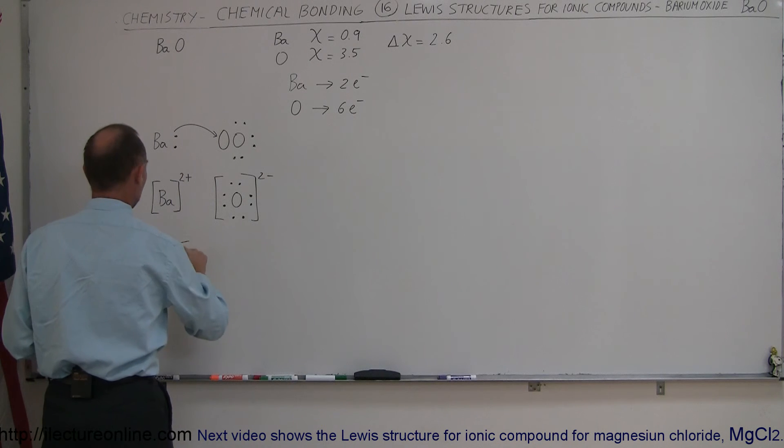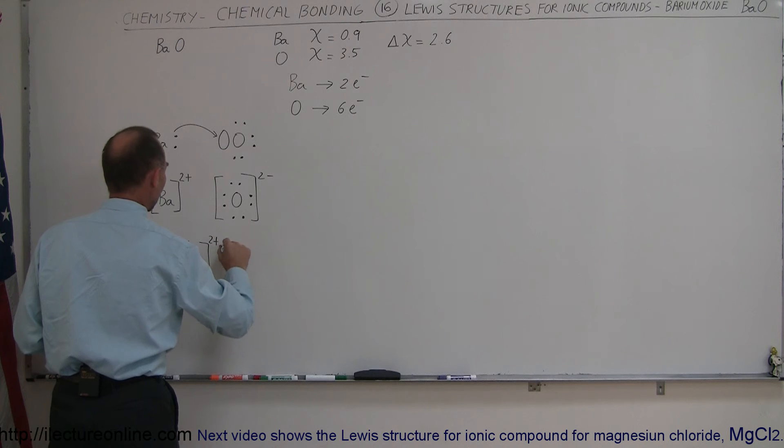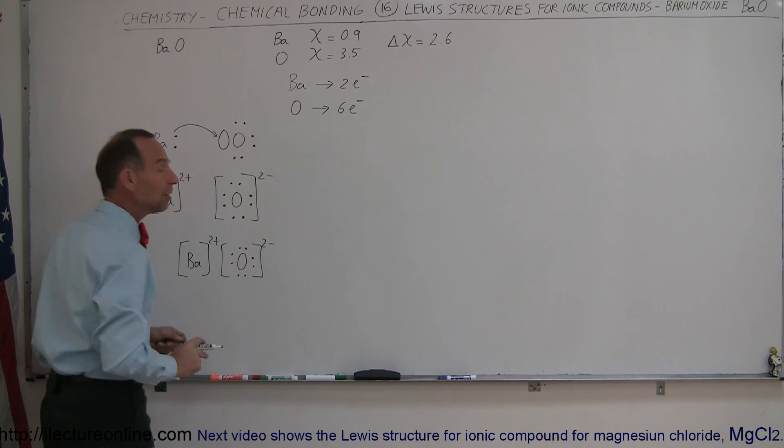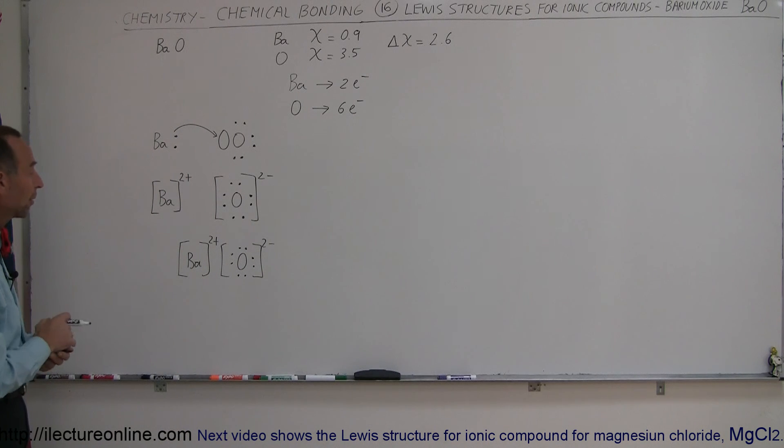Basically you end up with something that looks like this: barium which is 2+ and oxygen which is 2- bonded together because of their mutual electrical attraction for one another. That would be the Lewis structure for barium oxide.